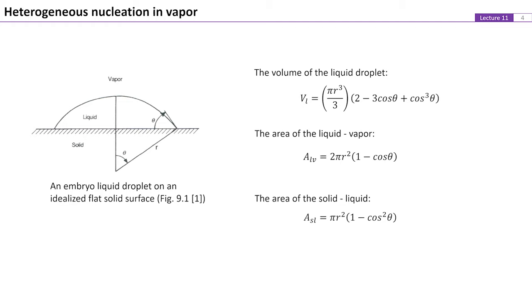The phenomena of nucleation for a liquid droplet in vapor is very similar to that for nucleation of vapor bubbles in liquid that was previously discussed. By definition and the geometry of a liquid droplet formed on a solid surface, the volume of the liquid droplet, the liquid to vapor interfacial area, and the area between the solid and the liquid interface can be determined as shown here.